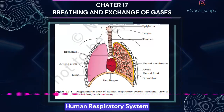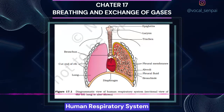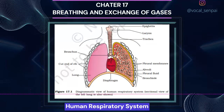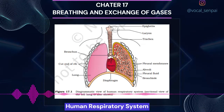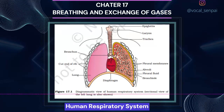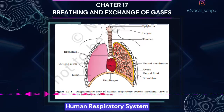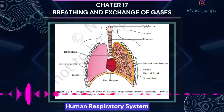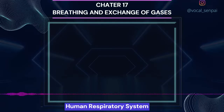Respiration involves the following steps: 1. Breathing or pulmonary ventilation, by which atmospheric air is drawn in and CO2-rich alveolar air is released out. 2. Diffusion of gases, O2 and CO2, across the alveolar membrane. 3. Transport of gases by the blood. 4. Diffusion of O2 and CO2 between blood and tissues. 5. Utilization of O2 by the cells for catabolic reactions and resultant release of CO2 — cellular respiration, as dealt in Chapter 14.